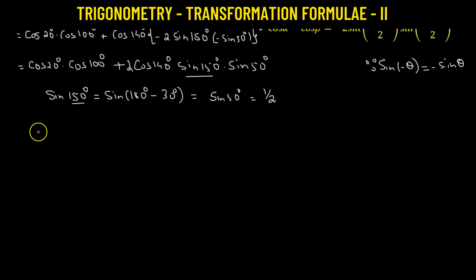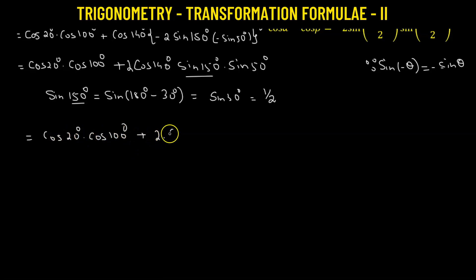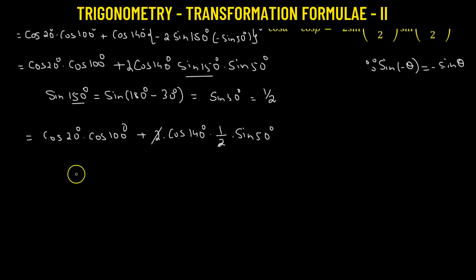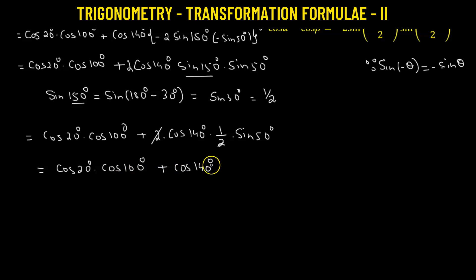Substituting all these values, we get cosine 20° times cosine 100°, plus 2 times cosine 140° times one half times sine 50°. The factor of 2 and one half cancel, leaving us with cosine 20° times cosine 100°, plus cosine 140° times sine 50°. To proceed, we'll use the transformation formulas.